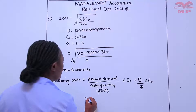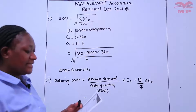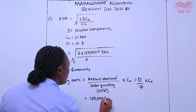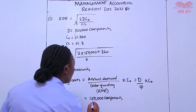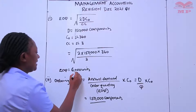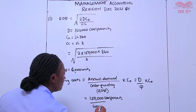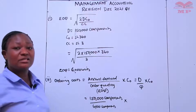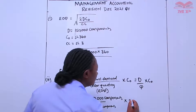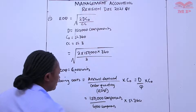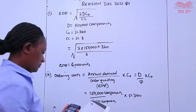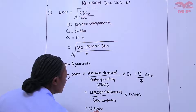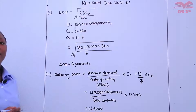To compute, we substitute with the figures. The annual demand refers to the annual purchases, which is 150,000 components. We divide this by the EOQ, which we've calculated, and that is 6,000 units or components. We multiply this by the ordering cost per order, which was given as 360 shillings. This gives us 9,000 shillings — this is our ordering cost.